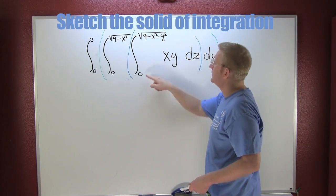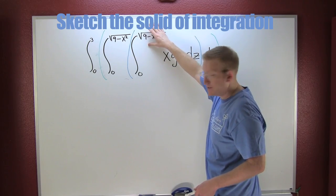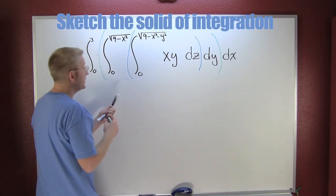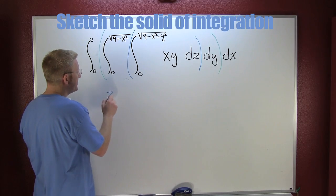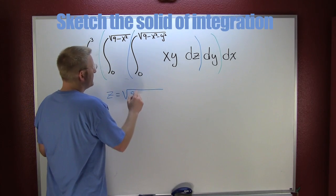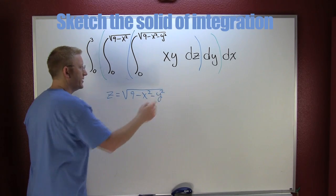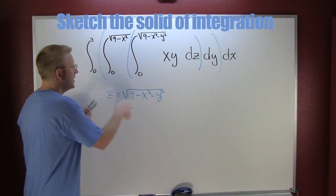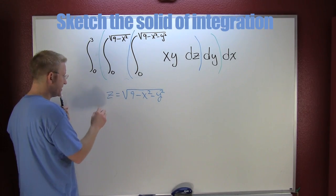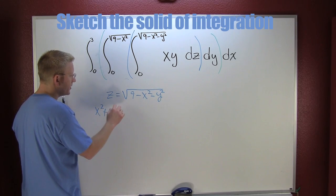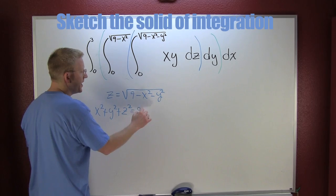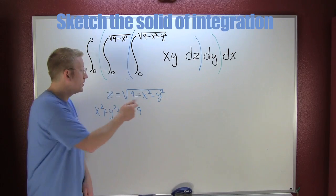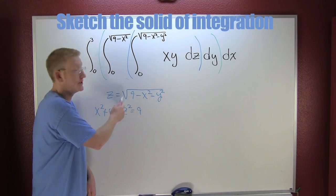The limits on z are going to go from zero to this upper function, which is z in terms of x and y. So z is equal to the square root of nine minus x squared minus y squared. To get this in familiar form, I square both sides and rearrange to get x squared plus y squared plus z squared equals nine. This is a sphere — but only the top half, because of the original restriction on the limits of integration.